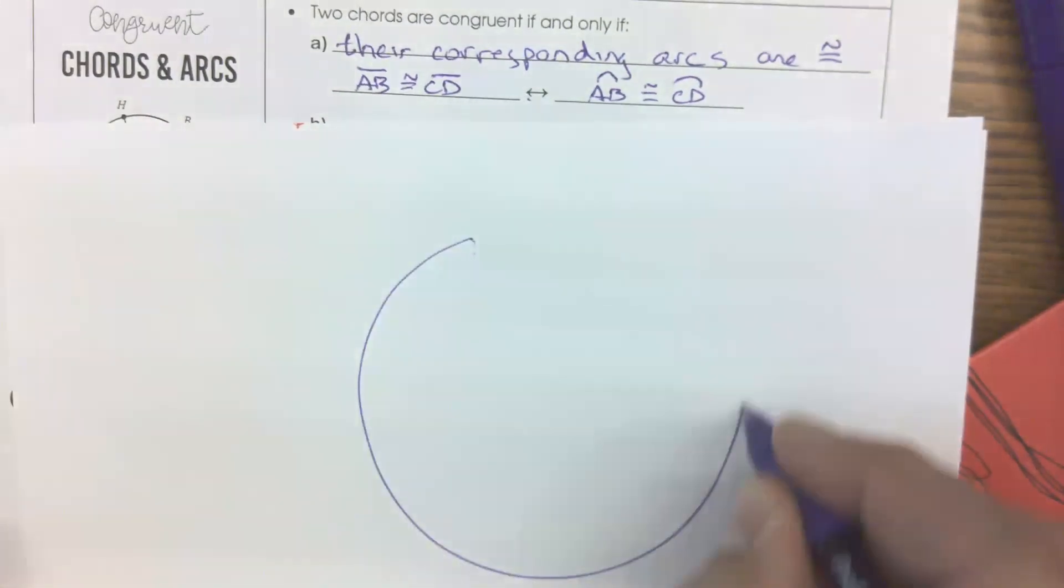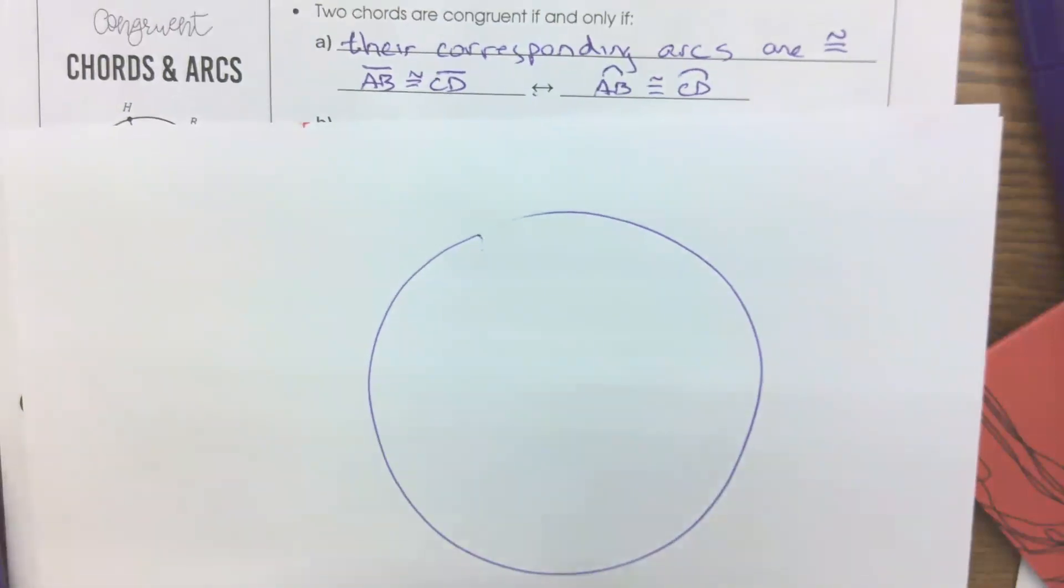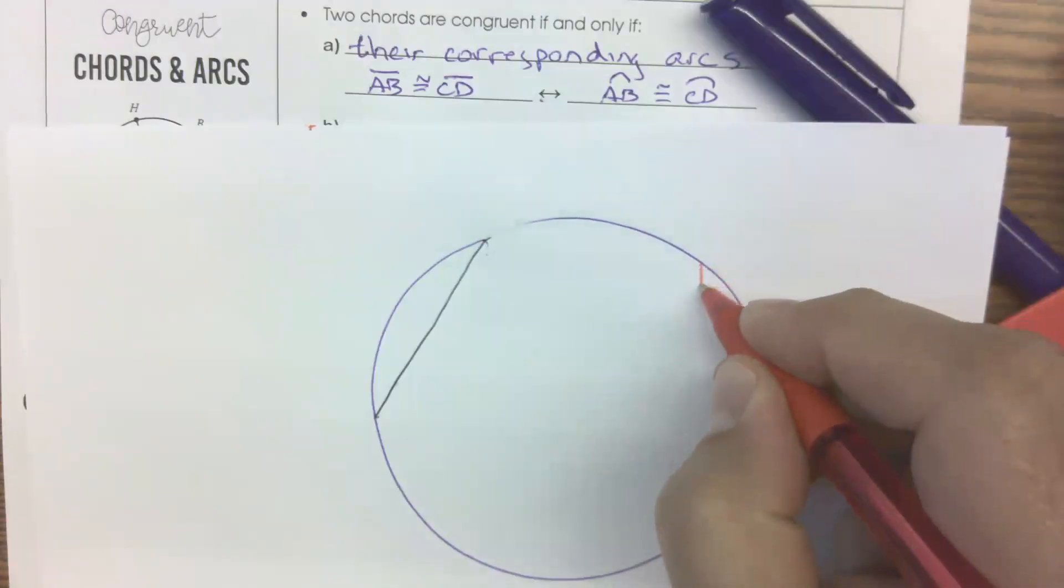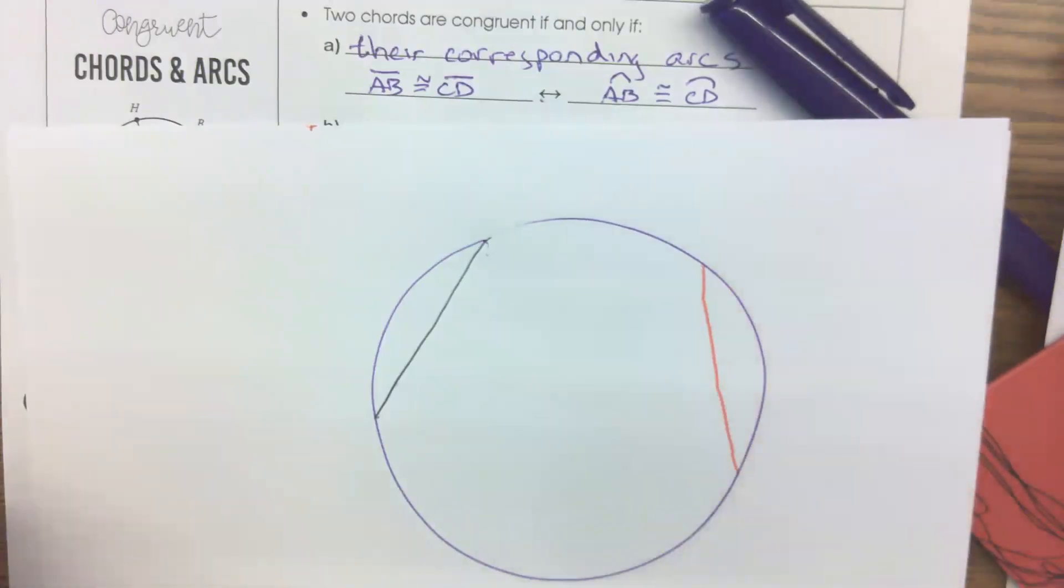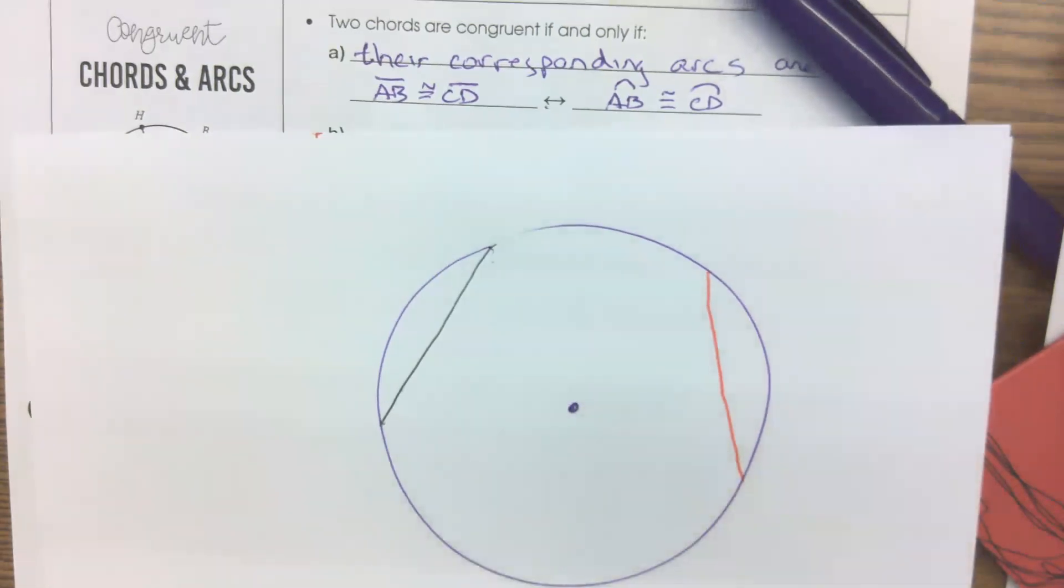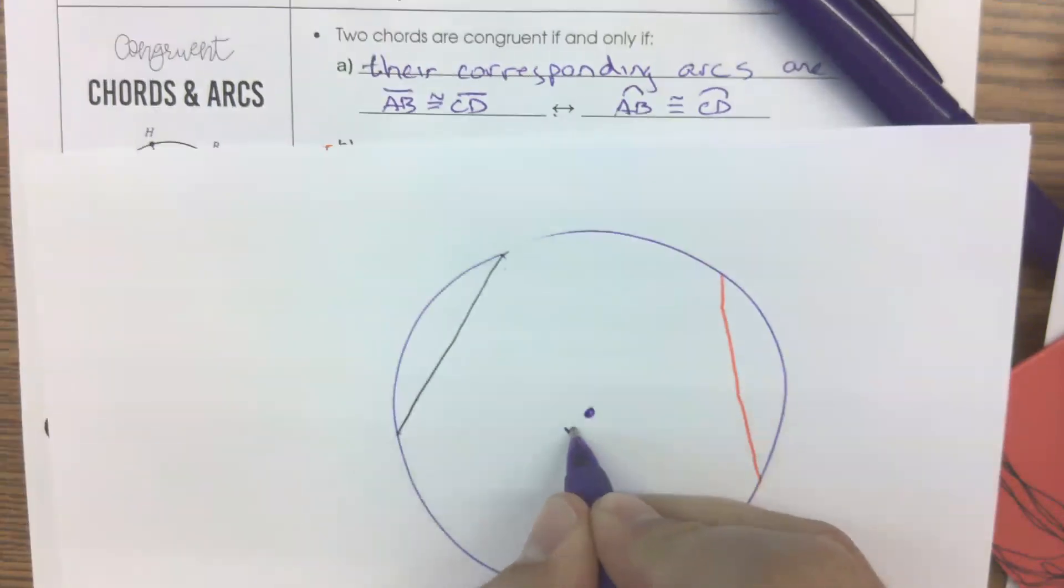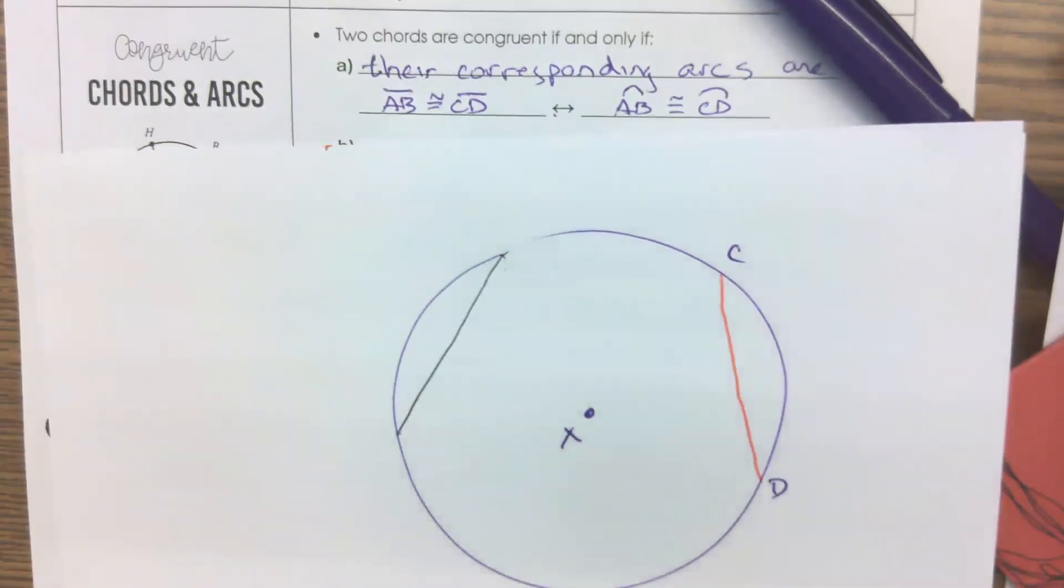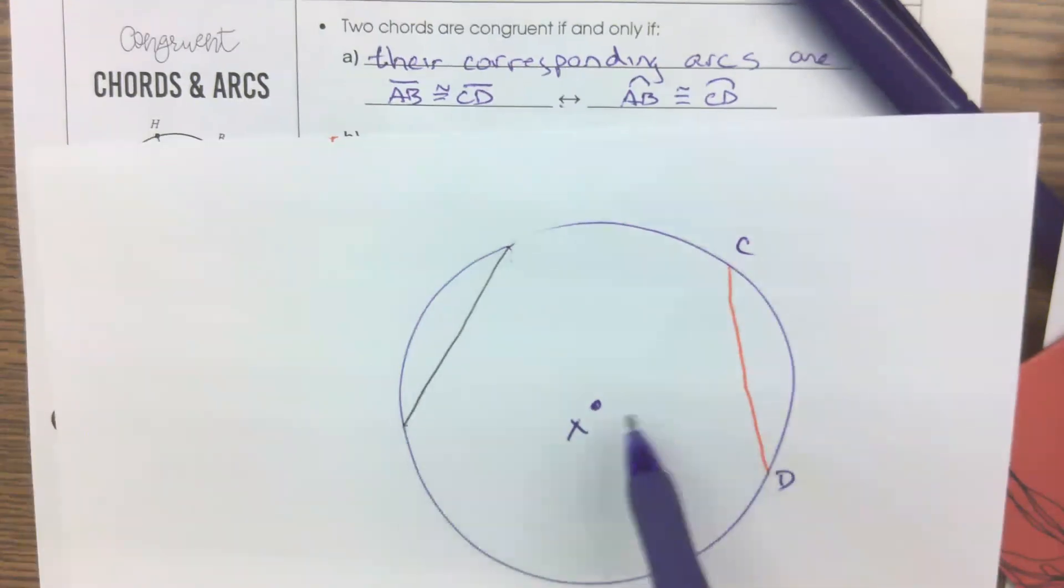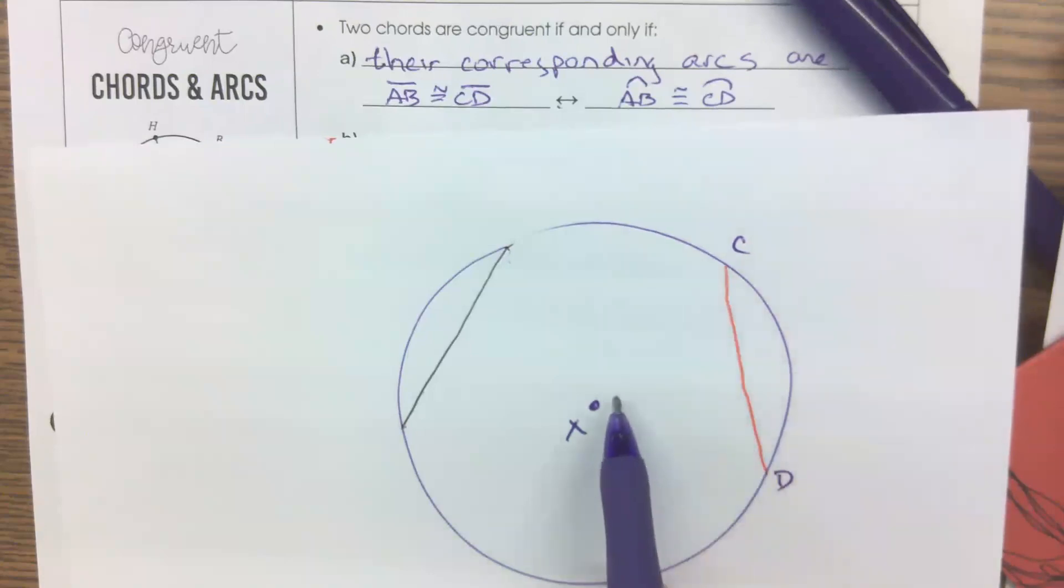All right, let's take a look at a circle again. And again, I'm going to talk about two different chords that are congruent in that same circle. What if I asked you to find the distance from this center point to this segment CD, this chord? How would you find that distance? What would it mean? Okay. Is it X to C? Is it X to D? Is it X to some other point?